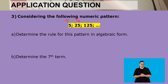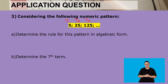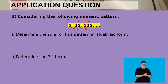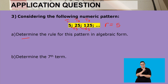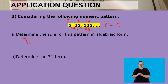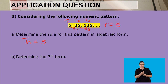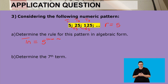Let's look at the next application question. We have the numeric pattern 5, 25, 125. Can you see how we move from the first term to the second term? We multiply by 5, and again from the second term to the third term we multiply by 5. That means we have a constant ratio of 5. Our first question asks us to determine the rule in algebraic form, starting with the ratio of 5 and looking for the relationship between the term number and the term itself.